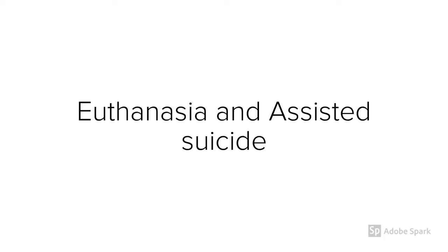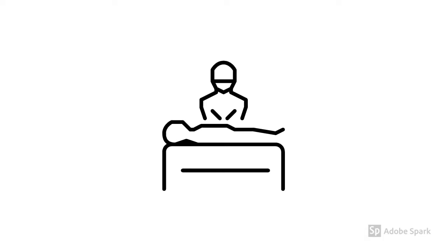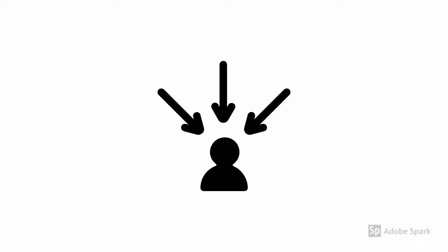The biggest difference between euthanasia and assisted suicide concerns who takes the life of the person. With euthanasia, the person's death is caused by somebody else, whereas with assisted suicide they are given all the necessary help to kill themselves, but the final act is taken by them alone.